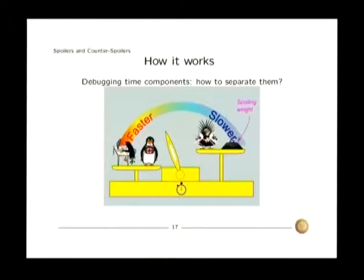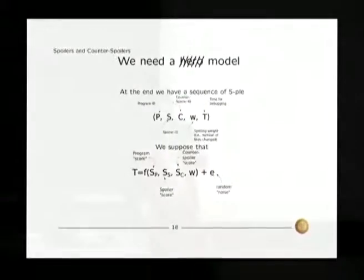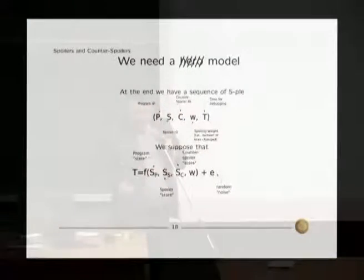In order to take into account that the more you write the easier it is to put bugs, we take into account also of this spoiling weight. We are still working on what really spoiling weight means formally, but more or less it will be the number of lines changed or something like that. So in the end we have a set of times that depends on those quantities and we wanted to split the data we have into the quantities.